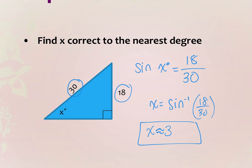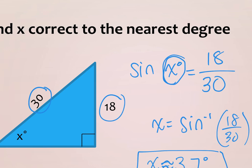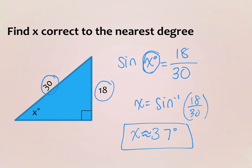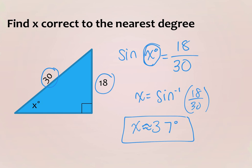Why did we use the inverse? Because we're looking for the angle. We can't divide by sine because sine is a function of an angle. In order to get sine out, we have to take the sine inverse. If we knew the angle, we could treat it as a number — like the sine of 30. But when X is inside the sine function, you have to use the sine inverse.